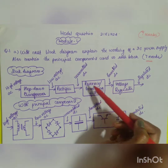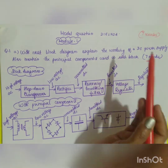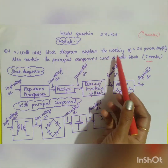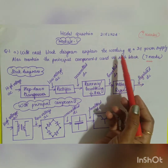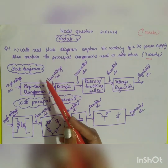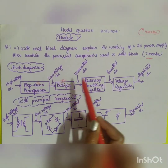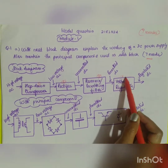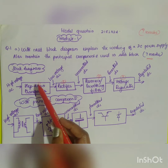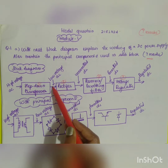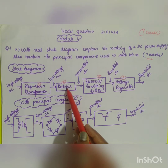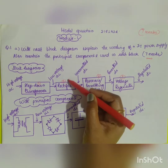Since it is asked for seven marks, we will focus on the block diagram, the principal components, and only the important points. The general block diagram of a DC power supply has four parts. The first one is the step-down transformer, which transforms the high voltage signal into a low voltage AC signal.